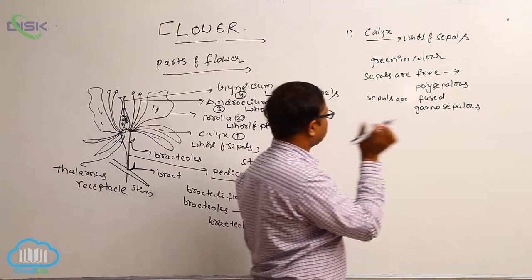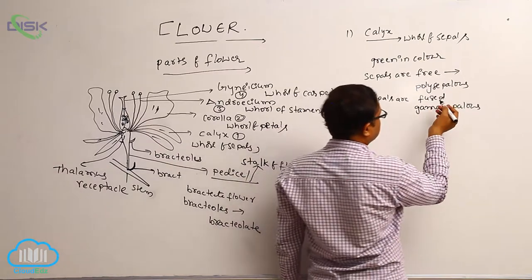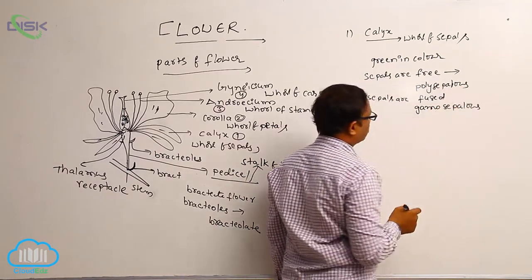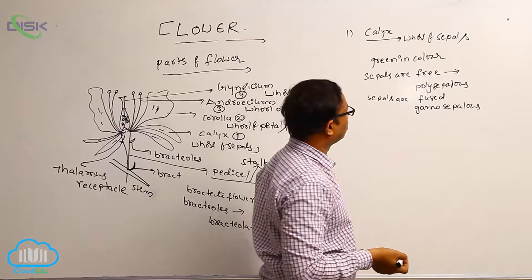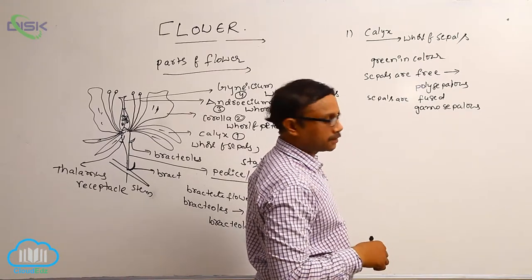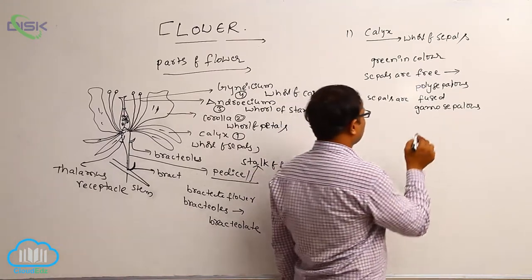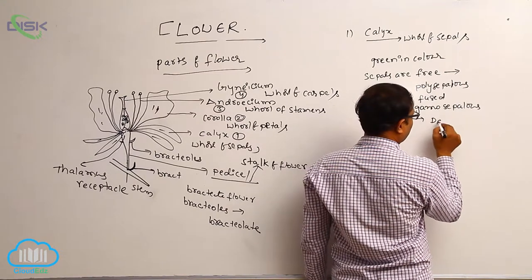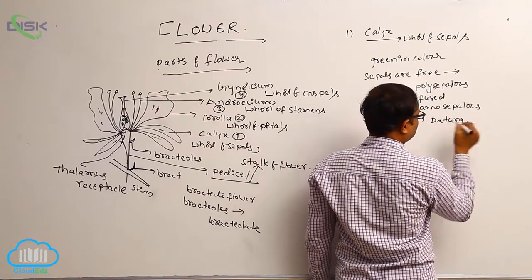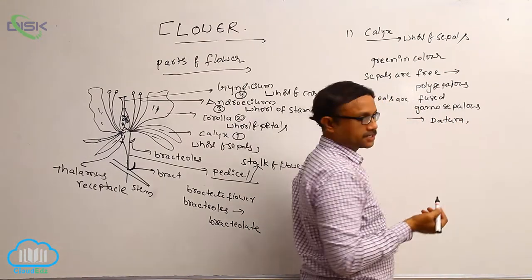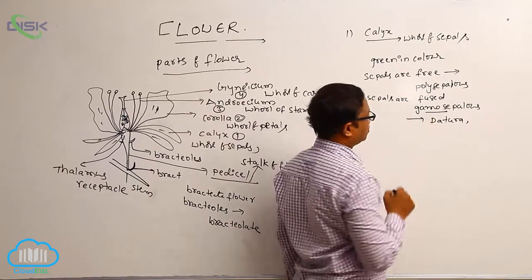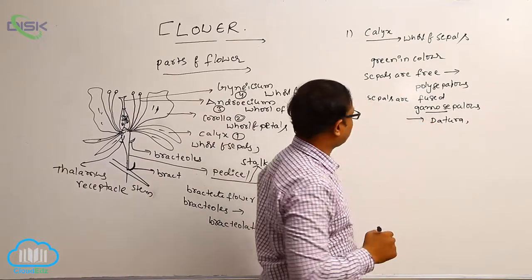Polysepalous example: most plants such as Arona are polysepalous. Gamosepalous examples include datura, hibiscus, and china rose — these are gamosepalous examples.